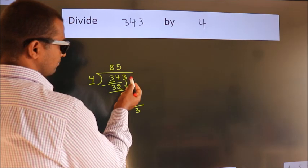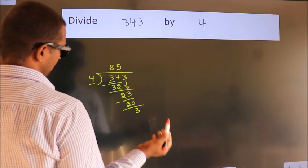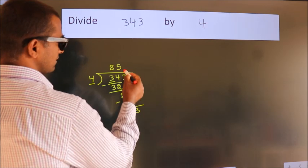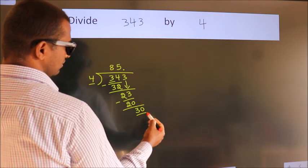After this, no more numbers to bring it down. So, what we do is, we put dot, take 0. So, 30.